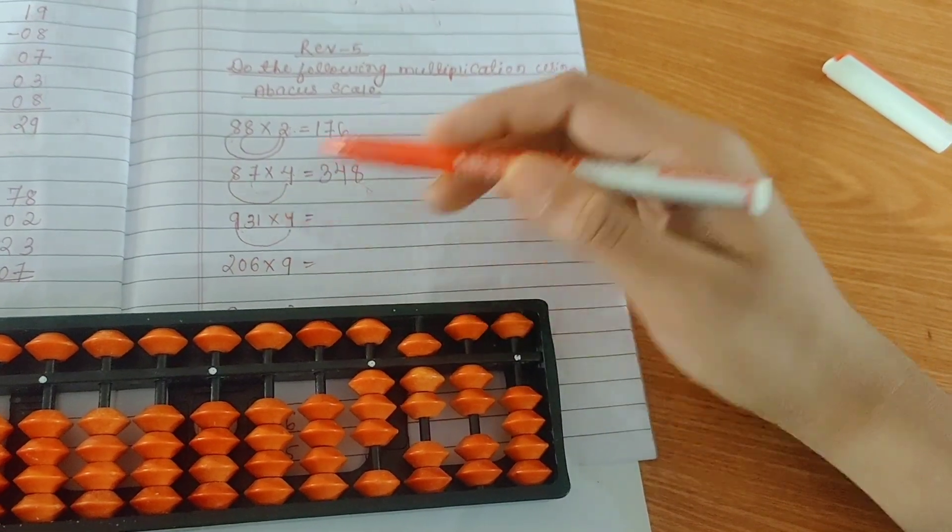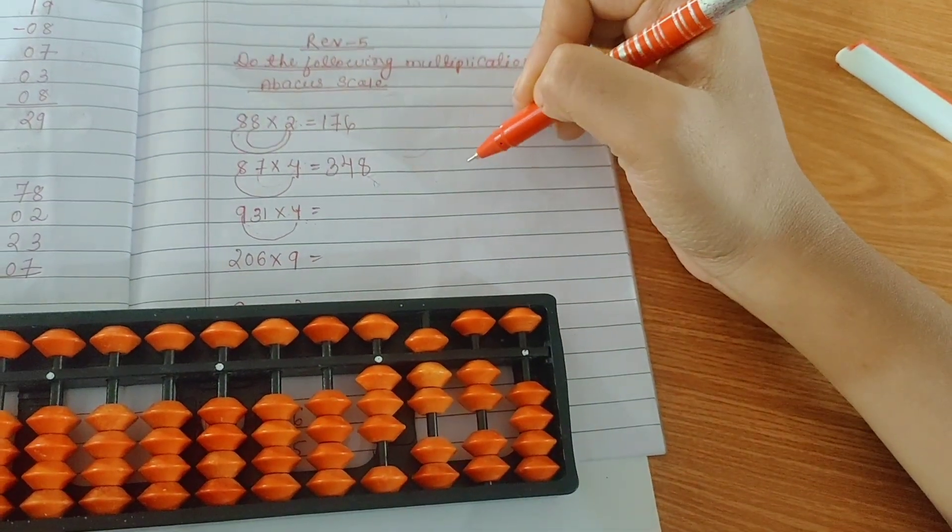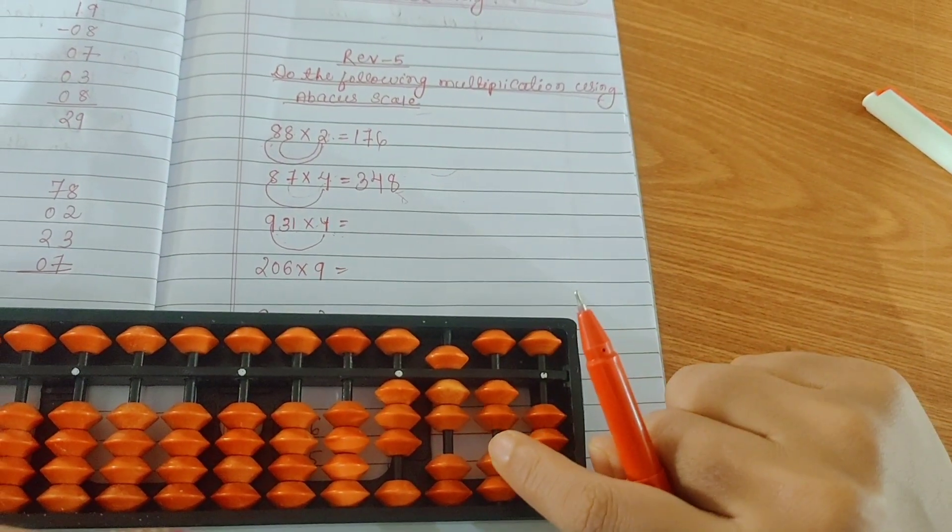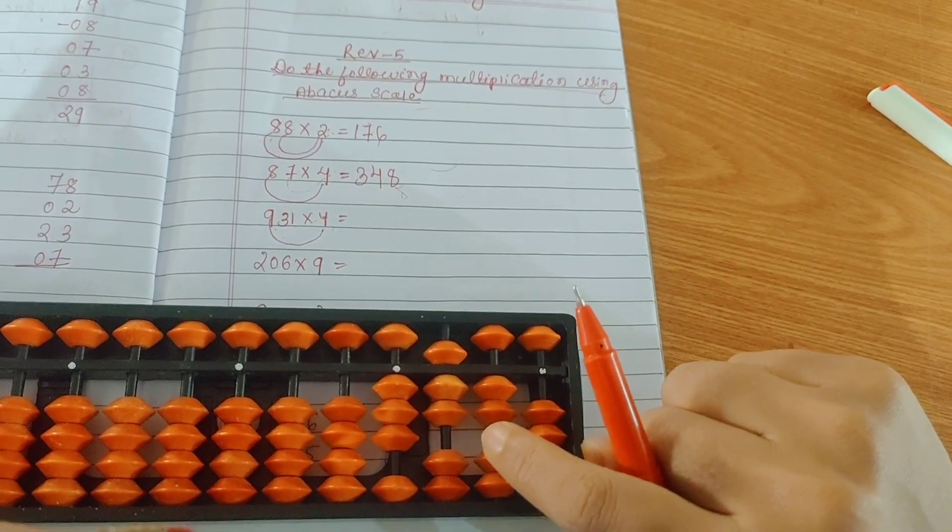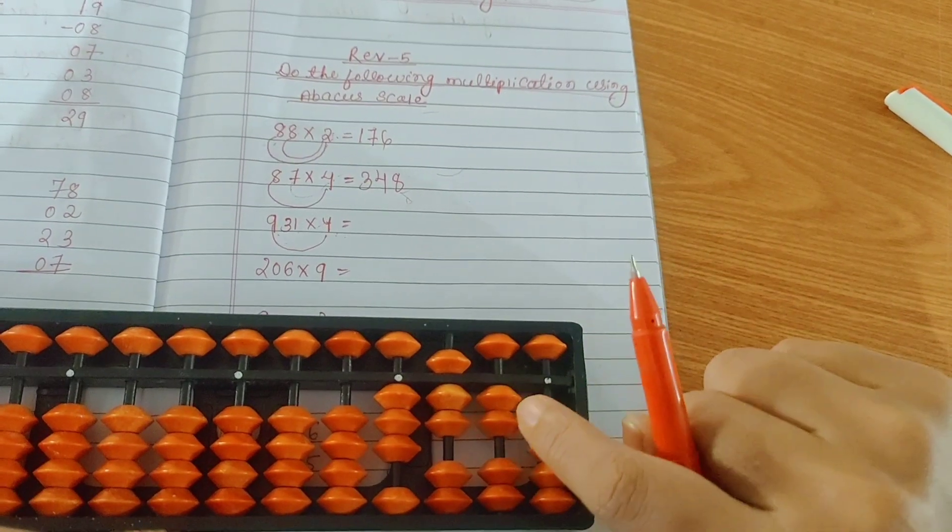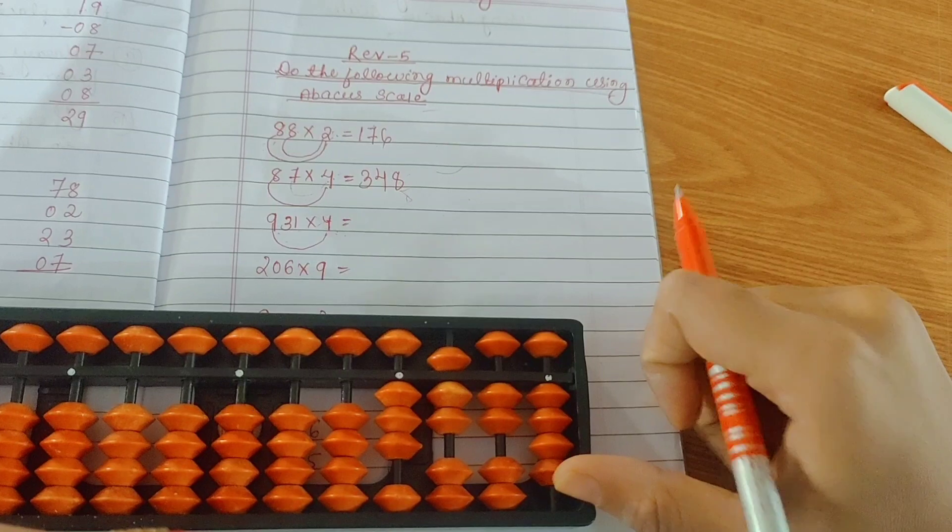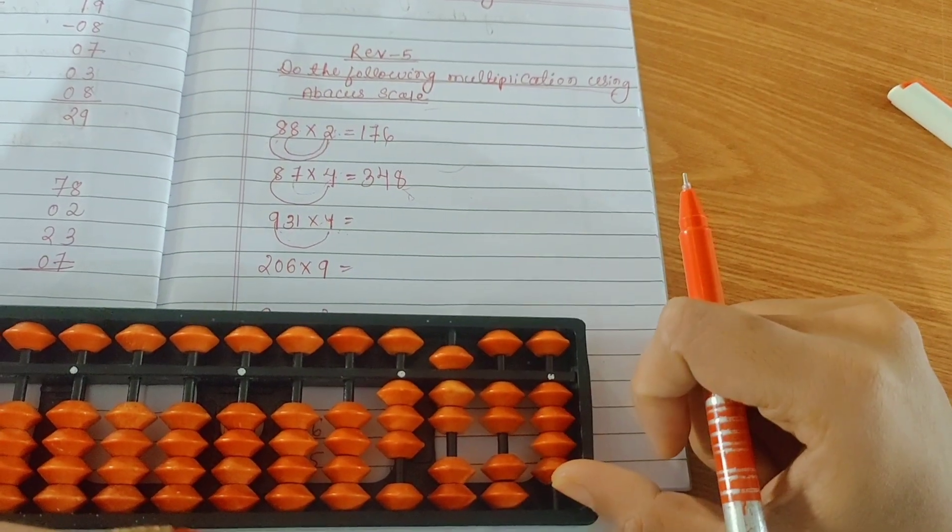Now 4 times 1 is 4. If a single digit comes, you will add 0 before that number. So 4 times 1 is 4, which is single digit. You will add 0 before 4. Here will be 0 and here will be 4.